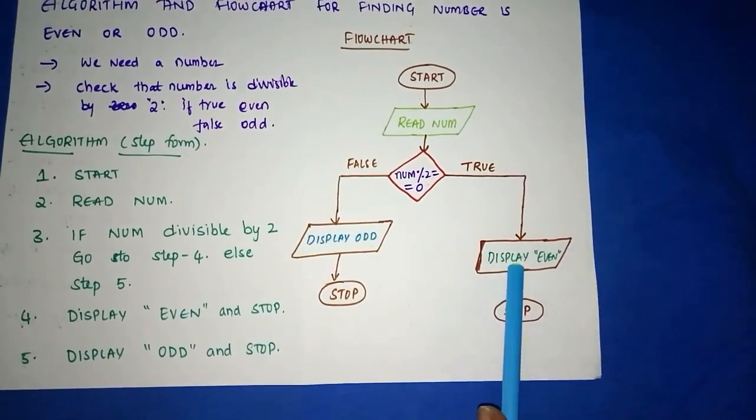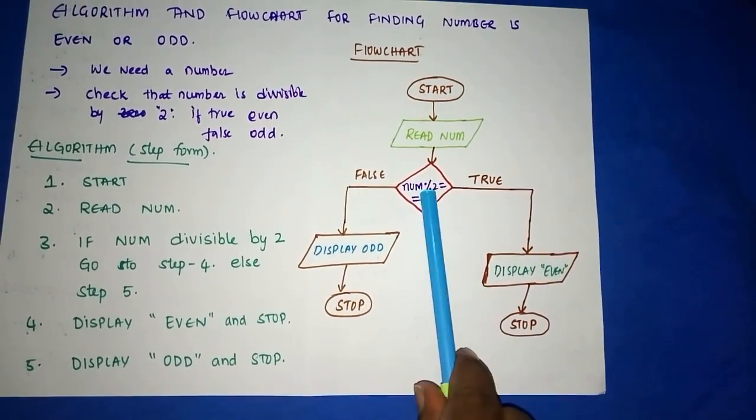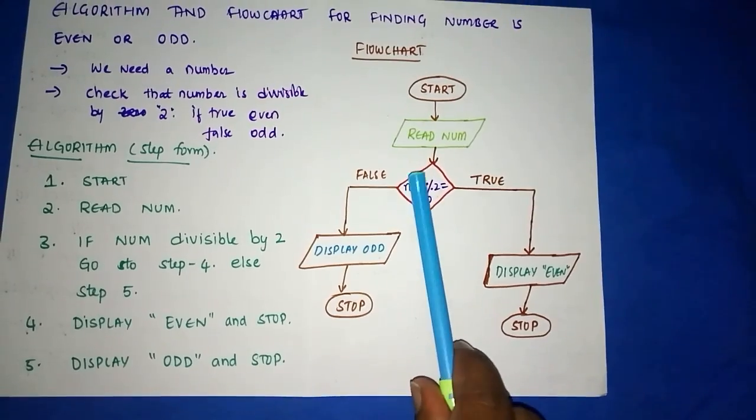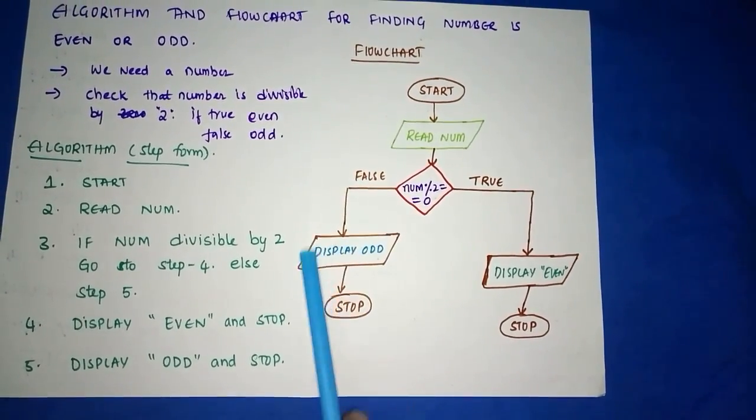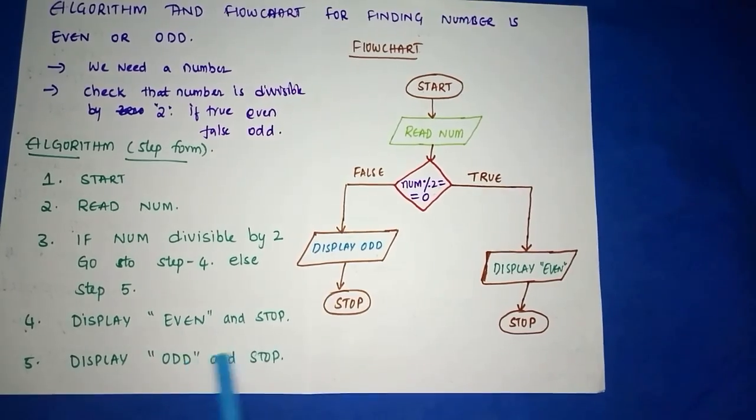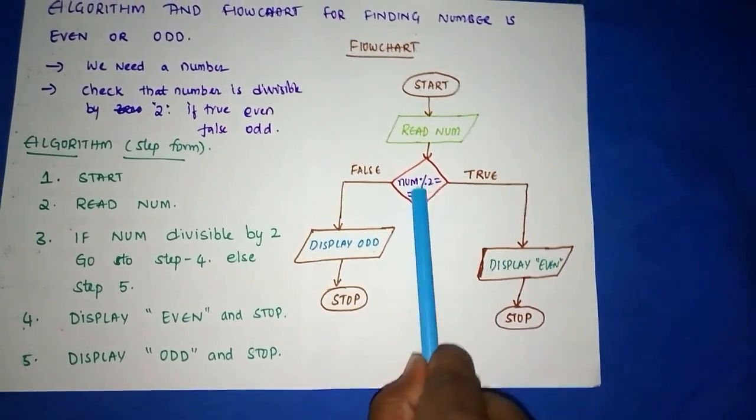Suppose if it is not true, that is, the number is odd. Then what will it do? It will come to this side, the false side, and display ODD. And then you have stop. So this is the fifth step, fourth step, third step, second step, and first step.